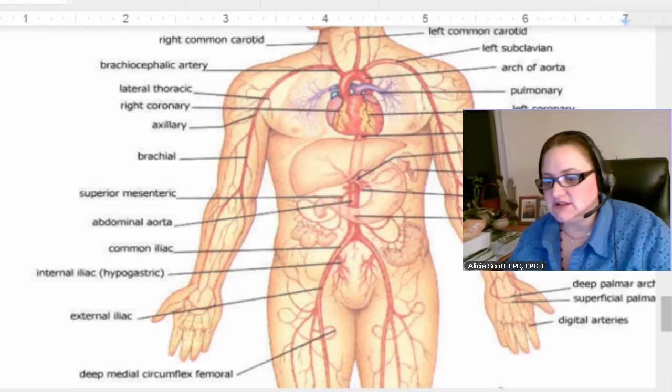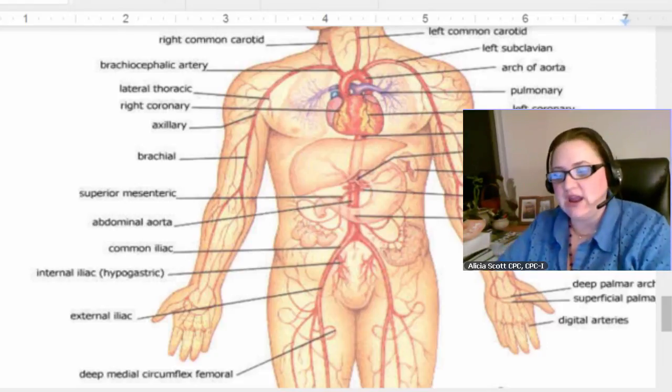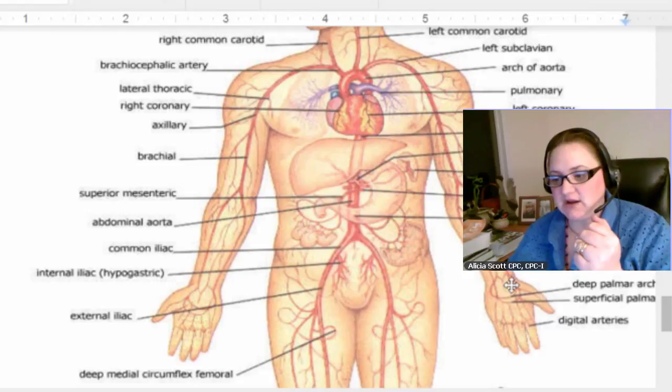Radial, now remember you got your ulna and your radius in your arms, the radius runs off to the thumb. And remember, if you're going to take somebody's radial pulse, you take it right here off the thumb. Then, that's the radial, that's what you're feeling is that radial pulse.